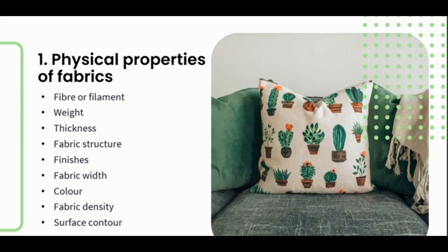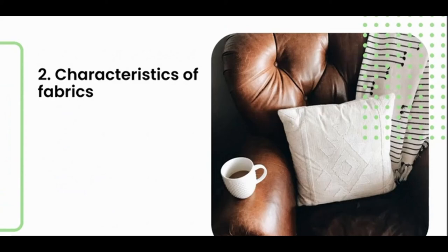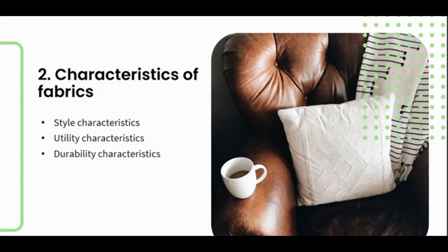Next we're going to look at the characteristics of the fabric — the dynamic physical parameters, meaning the physical changes that result from applying outside force to the fabric. Some of these characteristics include the style characteristics, the utility characteristics, the durability — how strong and durable is the fabric — and lastly the production characteristics.